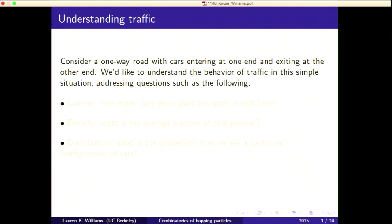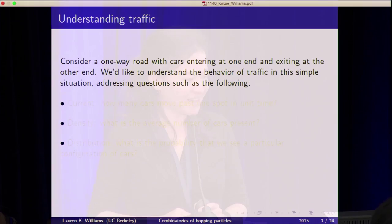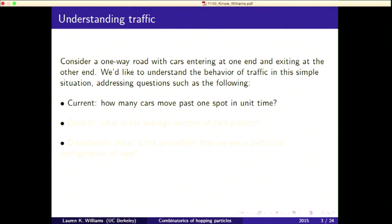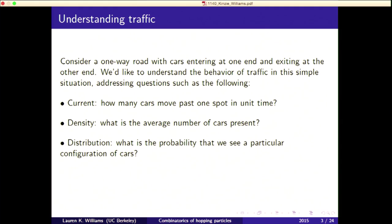So let's talk about traffic. Let's consider a one-way road, keeping things simple, with cars entering at one end and exiting at the other. One would like to understand the behavior of traffic in this simple situation, addressing questions like: current — how many cars move past one spot in unit time? Density — what's the average number of cars present? Distribution — what's the probability that we see a particular configuration of cars?